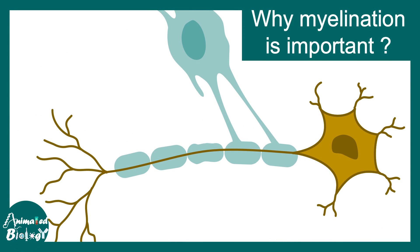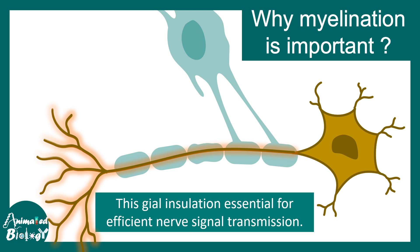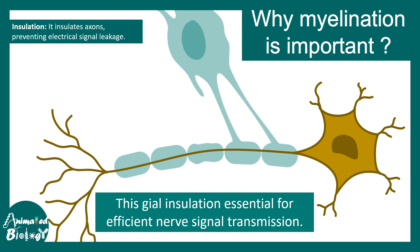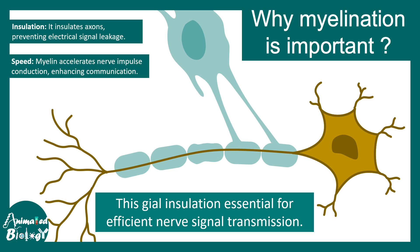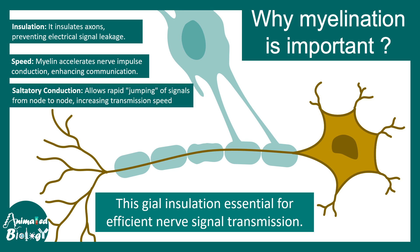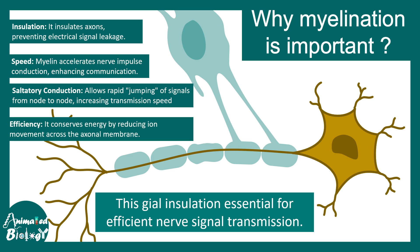The oligodendrocyte provides myelination. But why is myelination important for neuronal physiology? It turns out that this glial insulation is essential for nerve conduction in an efficient manner. This insulation not only protects from mechanical damage but also provides electrical insulation and prevents ion leakage. It improves the speed of action potential conduction, and due to this myelin sheath it is possible to have saltatory conduction in central nervous system neurons. From an energy perspective, this is also quite efficient.